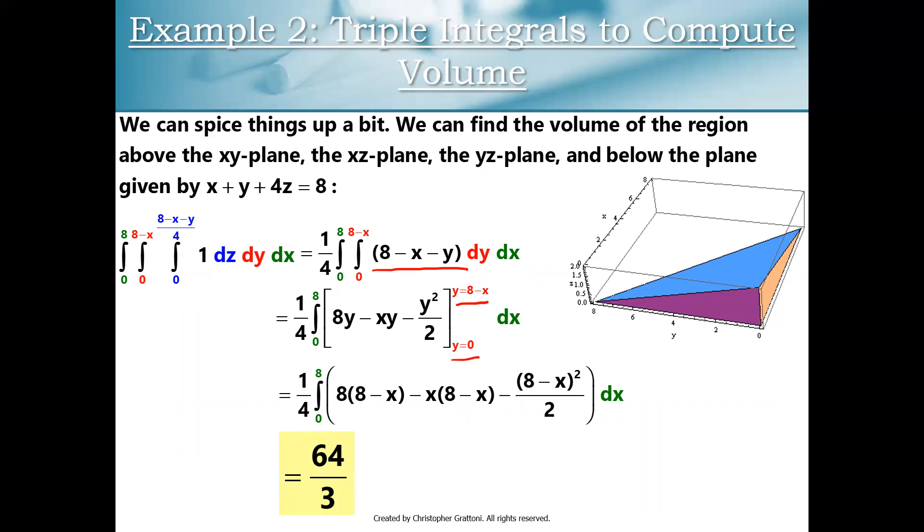Someone could reasonably push back at this and say, you didn't really need calculus for this, Mr. Grattoni. I know that the volume of a pyramid is one-third times the area of the base times the height. And I can easily figure out the height of this pyramid. It's 2 and the base is just a triangle. I know how to find the area of a triangle. So I could just do one-third times 32 times 2 and get 64 over 3. And that is, of course, true.